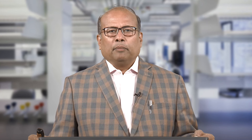We need to ensure that the distribution system design achieves reasonably high efficiency. This includes mandatory energy accounting in the system as per national power policy, with a focus on making each 11 kV feeder energy efficient and profitable. Special emphasis is placed on energy accounting for distribution transformers in theft-prone areas.